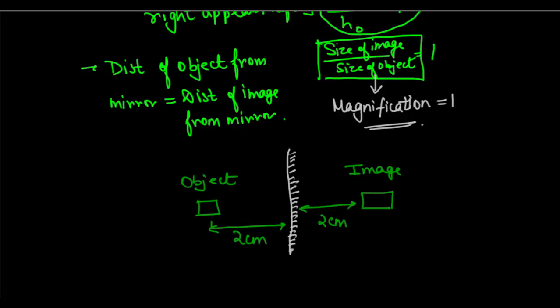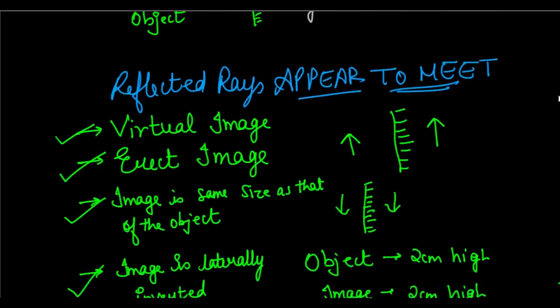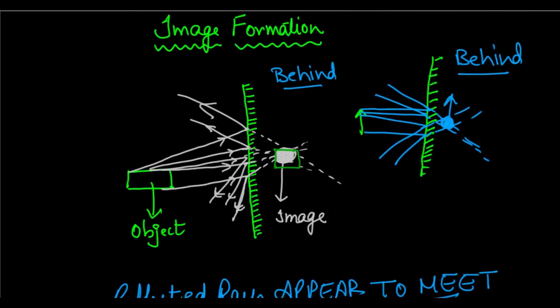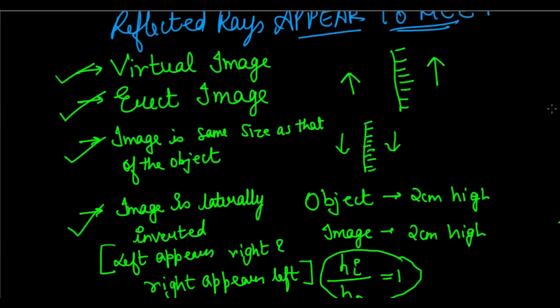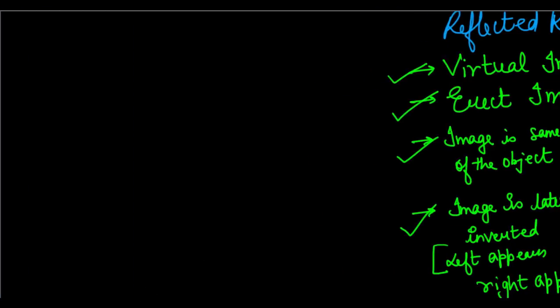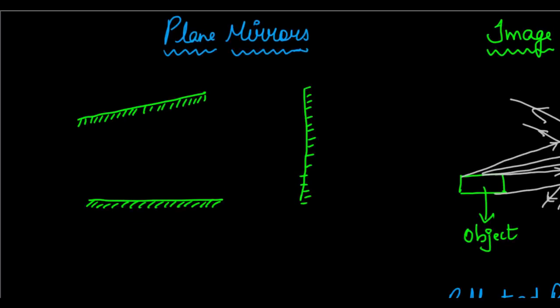So we have discussed the formation of an image by a plane mirror and the features of the image: virtual image, erect image, same size as the object, laterally inverted, and equal object and image distances from the mirror. With this, we conclude this video on plane mirrors. Please look forward to the next videos on spherical mirrors. Thank you very much. Goodbye, stay healthy, stay smart, and do keep studying.